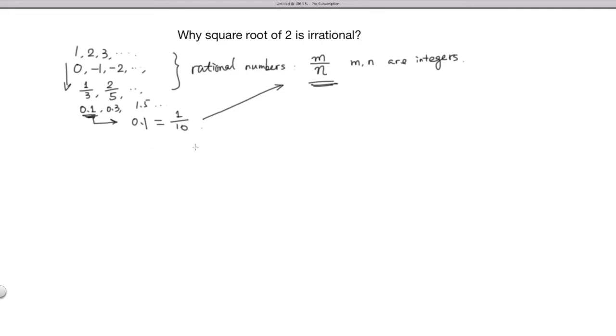In particular, I think the first number people realized was not a rational number was square root 2. So in here, we're going to show that square root 2 is not a rational number.